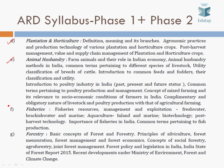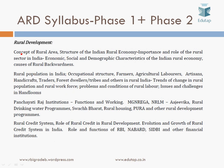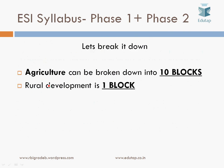The ARD syllabus also includes plantation, horticulture, animal husbandry, fisheries, forestry, agricultural extension, and ecology and climate change. For rural development: concept of rural area, structure of the Indian rural economy, rural population, Panchayati Raj institutions, NAREGA, NRLM, Ajeevika, Swachh Bharat, drinking water programs, rural credit system, and the role and functions of RBI, NABARD, and SIDBI. We need to break this into blocks — the agricultural syllabus into 10 blocks and an 11th block for rural development.